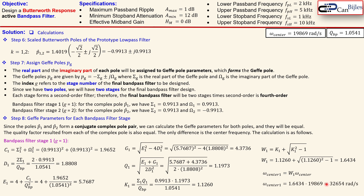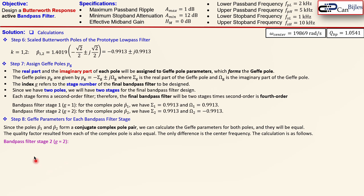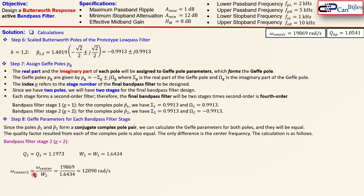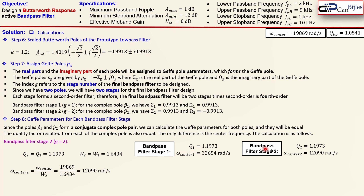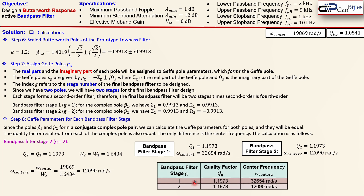Stage 2 is very similar to stage 1. The quality factor Q2 equals Q1, and W2 equals W1. The only difference is the center frequency omega_center_2, which is different from omega_center_1. In summary: both bandpass filter stages have the same quality factor; only the center frequencies differ. This is shown in a table with stage 1 and stage 2, each with quality factor and center frequency, and G as the filter stage.